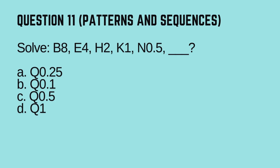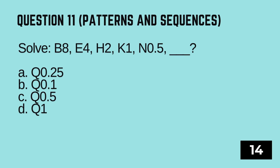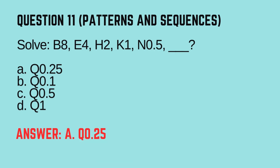Question 11. Patterns and Sequences. Solve: B-8, E-4, H-2, K-1, N-0.5, blank. Options: A. Q-0.25, B. Q-0.1, C. Q-0.5, D. Q-1. Timer starts now. The correct answer is A — Q-0.25.